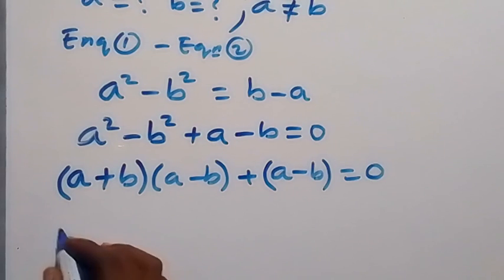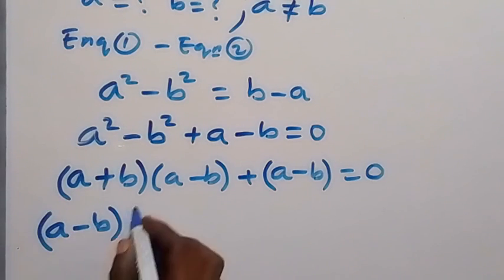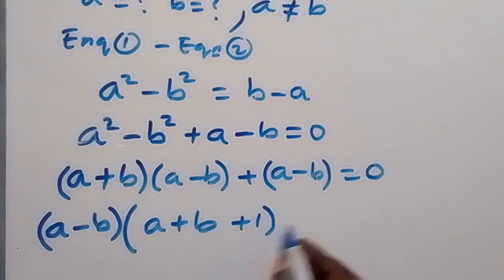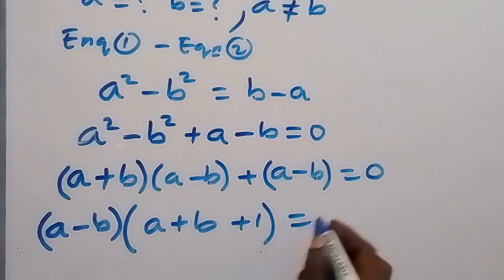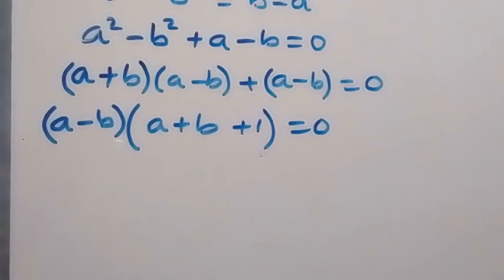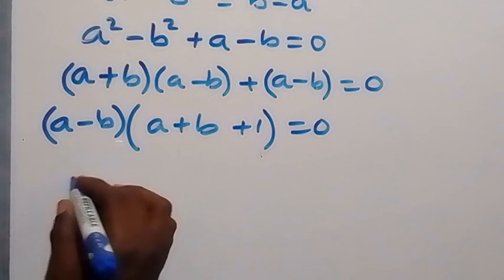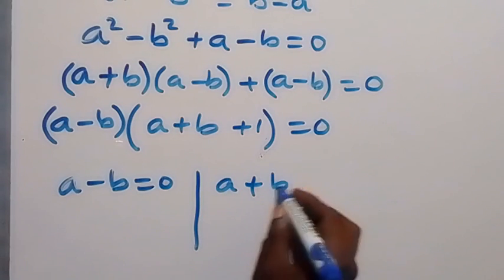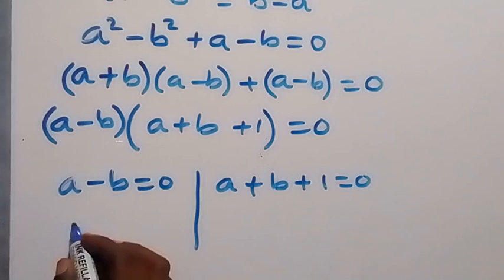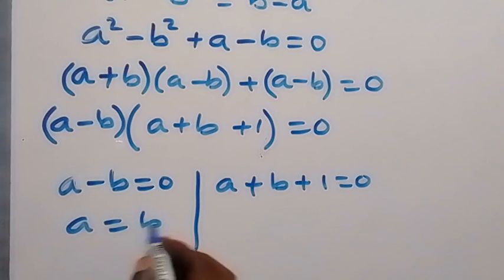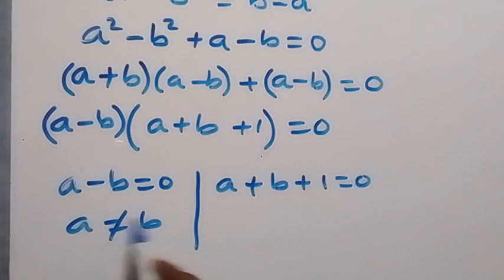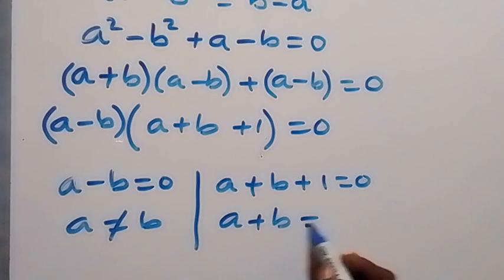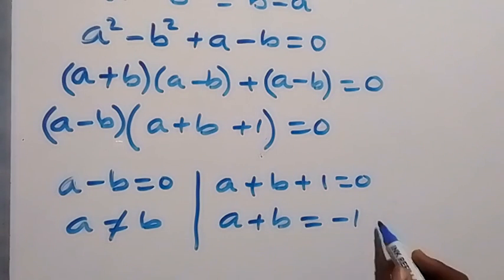We have (a minus b) common here — let's take it out. What we are left with is (a plus b) plus 1, which equals 0. So we have (a minus b) times (a plus b plus 1) equals 0. Since a is not equal to b, then a plus b plus 1 equals 0, giving us a plus b equals minus 1. Let's call this equation 3.